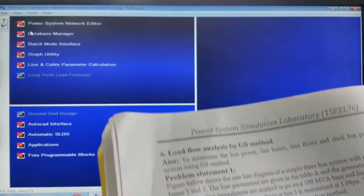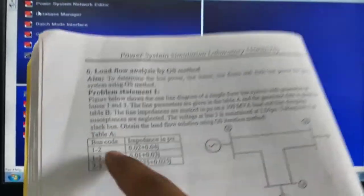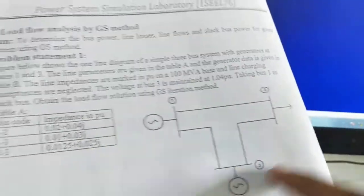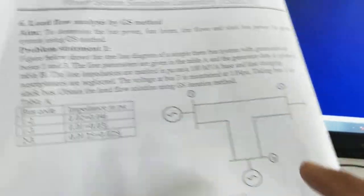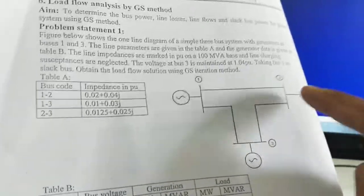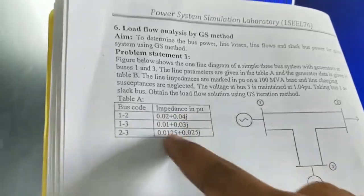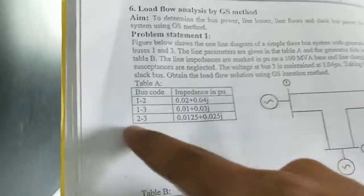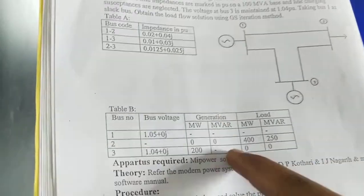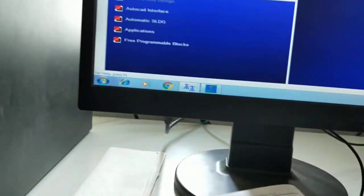Here we have load flow analysis by the GS method. In Table A, bus numbers 1, 2, and 3 are connected. Generators are connected at bus numbers 1 and 3, and a load is connected at bus number 2. The transmission impedances in per unit are given between buses 1-2, 1-3, and 2-3. The next table gives bus voltages, megawatt and MVAr generation, and load values.